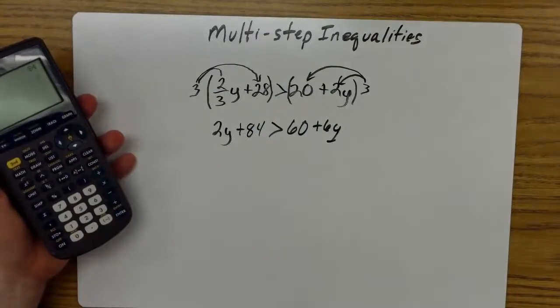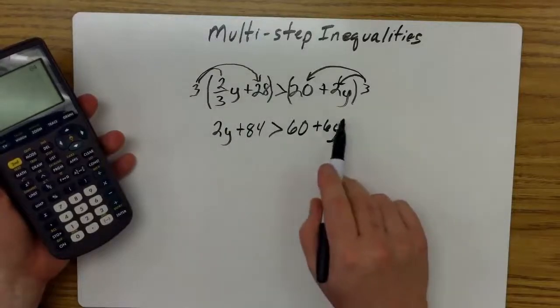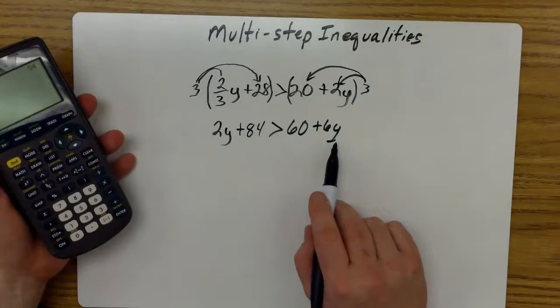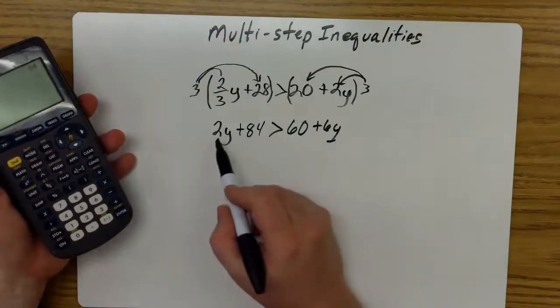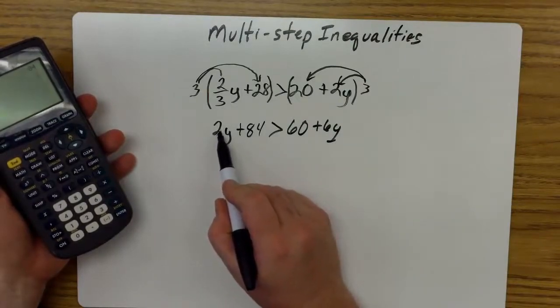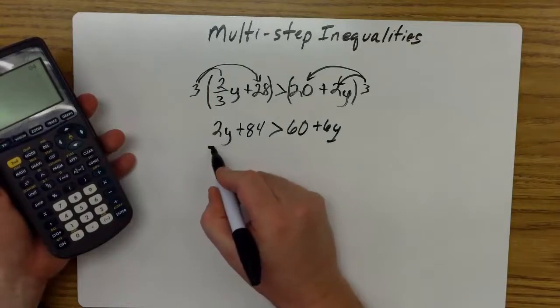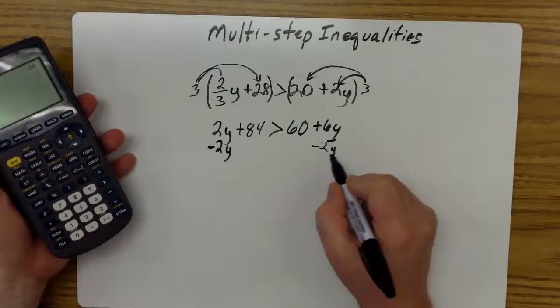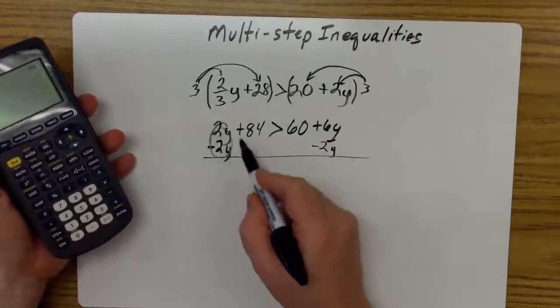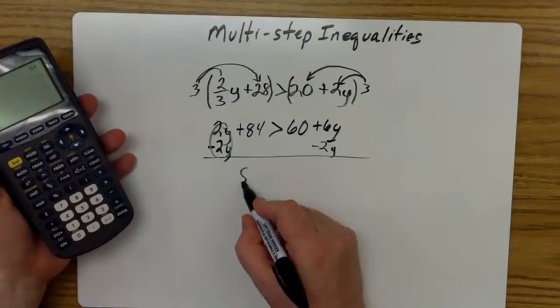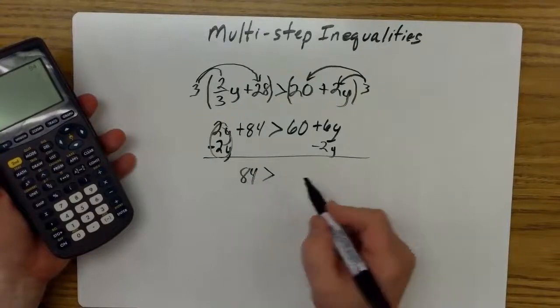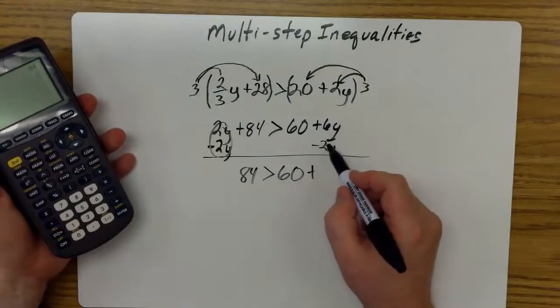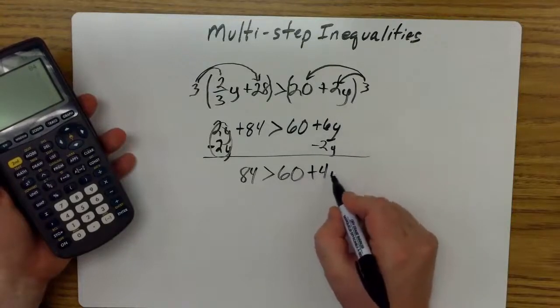The next thing I'm going to do is check to see if there's any more combining or simplifying. Nothing there. So we're going to step 2, which is move all your variables to one side. Since this variable here has a smaller coefficient, I recommend you eliminate it from this side by minusing 2y. And I have to minus 2y from the other side as well. That gives me 0 plus 84, which is still 84, greater than 60 plus 6 minus 2 leaves you with 4y.